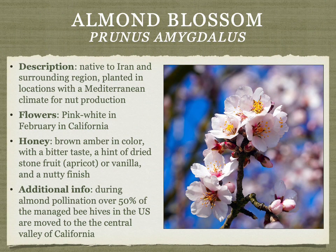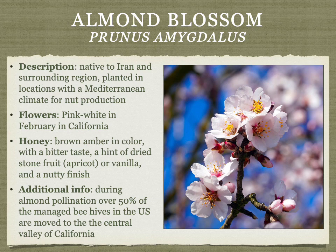Almond blossom honey comes from almonds, which originated in Iran and are now primarily grown in California's Central Valley. It's important for commercial beekeepers — 50 to 80% of commercial US beehives are deployed in February to March for almond pollination. The honey is not often harvested; it has a bitter taste, sometimes with stone fruit, dried fruit, and a nutty finish. Some people don't like it for the bitterness, but it's a unique honey worth trying if you can get a sample.